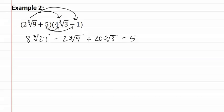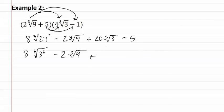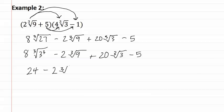Let's see if we can simplify these further. In this first one we have twenty-seven. Remembering that twenty-seven is three cubed, we rewrite it. Next we have negative two cubed root of nine. Nine is only three squared, and therefore none of the threes will come out, so we leave it as negative two cubed root of nine. Next we have twenty cubed root of three, which is also already simplified. And lastly we have negative five. The cubed root of three cubed is three, and three times eight is twenty-four.